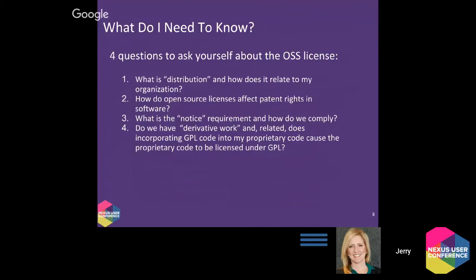Where is this open source software used? You want to make sure that anything you've patented or any competitive advantage in the software you've written isn't at risk. And then giving notice — some licenses just say give proper notice, give proper rights, let people know you've included our software and include our license. And then derivative work — maybe 80% of your application is made up of open source with a little that you've added. Is that derivative work? If you can answer these four questions with your colleagues and legal representation, you're well down the path of managing your risk appropriately.